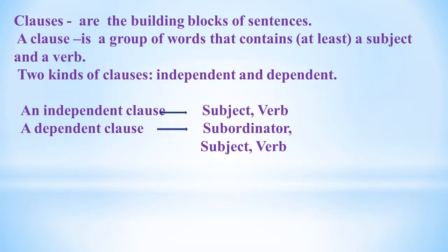Clauses are the building blocks of sentences. A clause is a group of words that contains at least a subject and a verb. There are two kinds of clauses: independent and dependent. An independent clause contains a subject and a verb and expresses a complete thought. It can stand alone as a sentence by itself. An independent clause is formed with a subject, a verb, and often a complement.